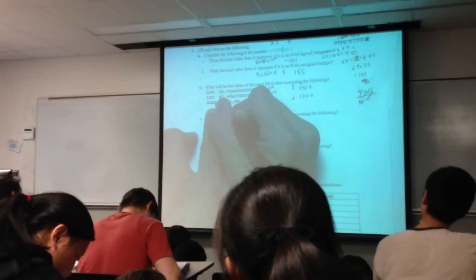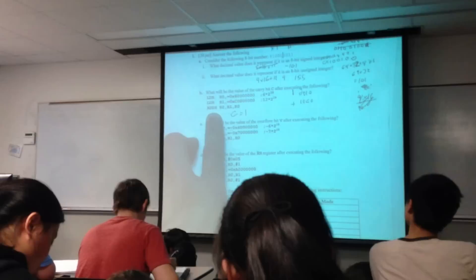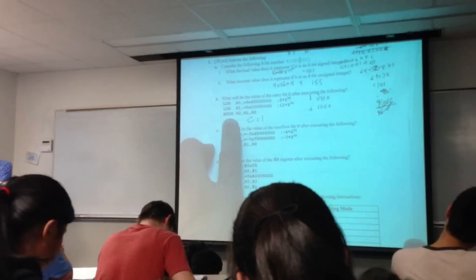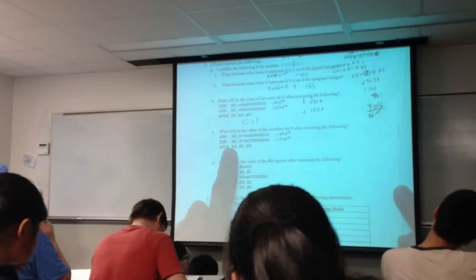Okay, so this means that the C bit is equal to 1. Now, be careful for questions like this, because what happens if I remove this S? It's not the condition code. It won't set the condition code. So any time I have S, it sets the condition code. Any time I don't have the S, it doesn't.